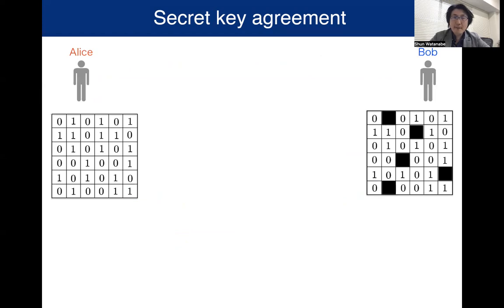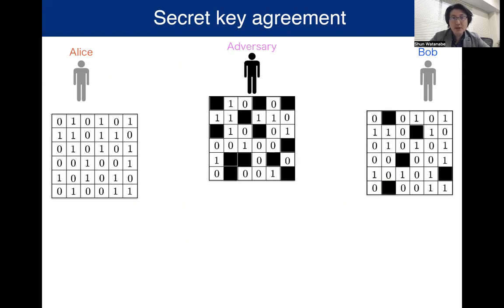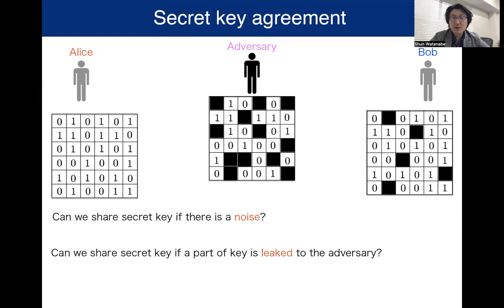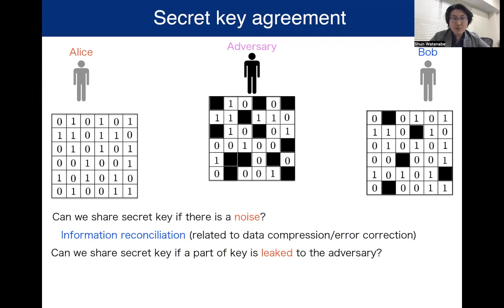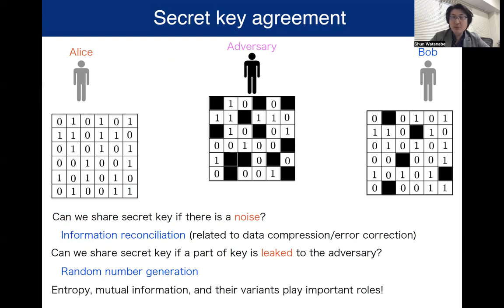However, in practice, the shared key might be disturbed or erased by noise, or part of the secret key might be leaked to the adversary. So we need to consider problems such as: can we share a secret key even if there is noise, or can we share a secret key even if part of the key is leaked to the adversary? The first question can be handled by a technique called information reconciliation, which is related to data compression or error correction. The second question can be handled by the technique called random number generation. In these problems, entropy, mutual information, and their variants play an important role.